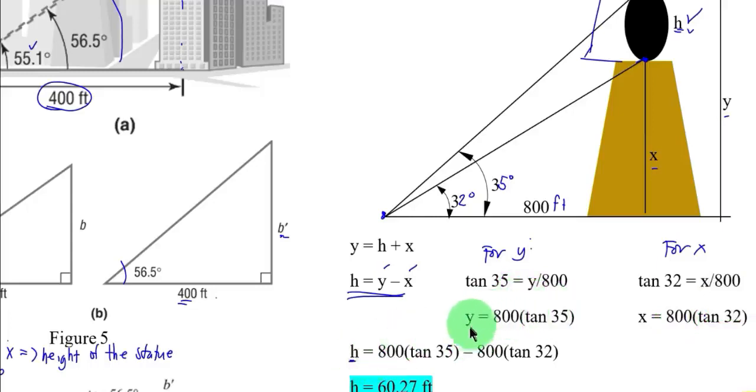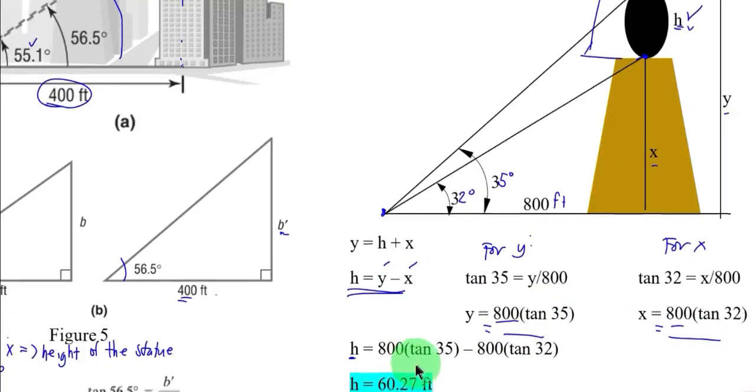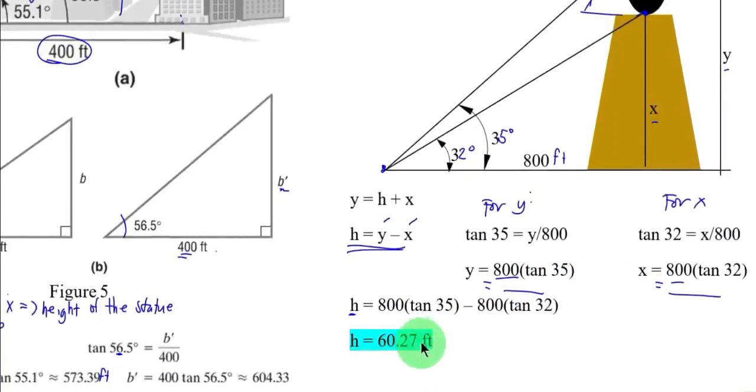So just substitute this y and x. So this equation, or you can simply solve x here or y, then your x here, then just subtract the two. So we can get 60.27 feet. That is the height of the Lincoln's face.